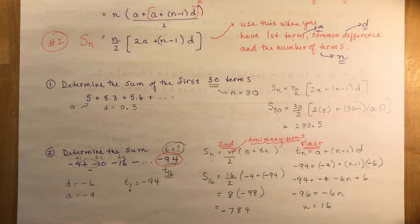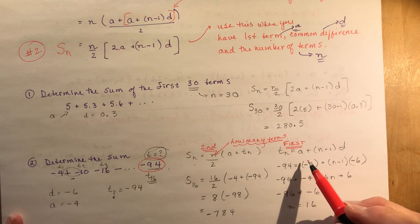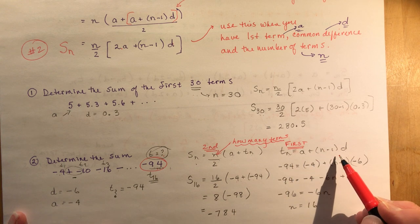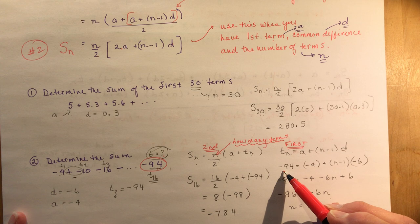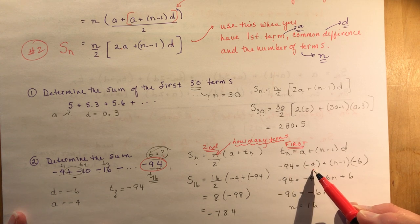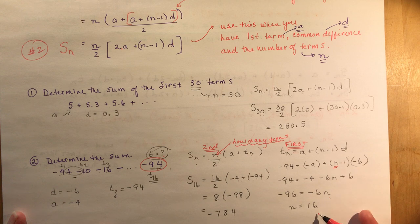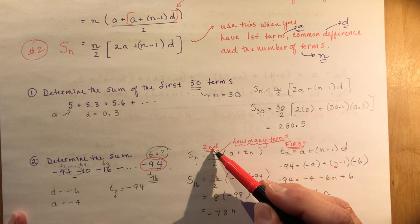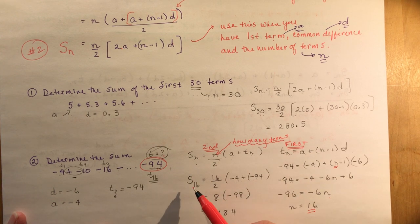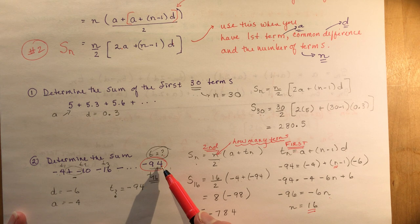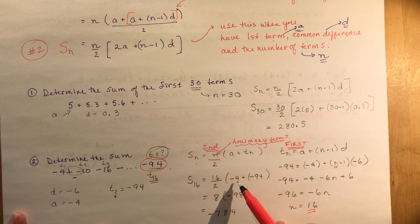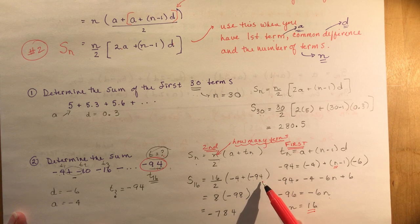So I put minus 94 into the equation — the nth term formula: a plus n minus 1 times d, where the nth term is minus 94, the first term is minus 4, and I solve for n. I expanded, simplified, and found that n is 16. Once you have n as 16, you go back and use the sum formula. The sum of 16 terms is 16 divided by 2, times the first term minus 4 plus the last term minus 94, giving minus 98 times 8, which gives minus 784.